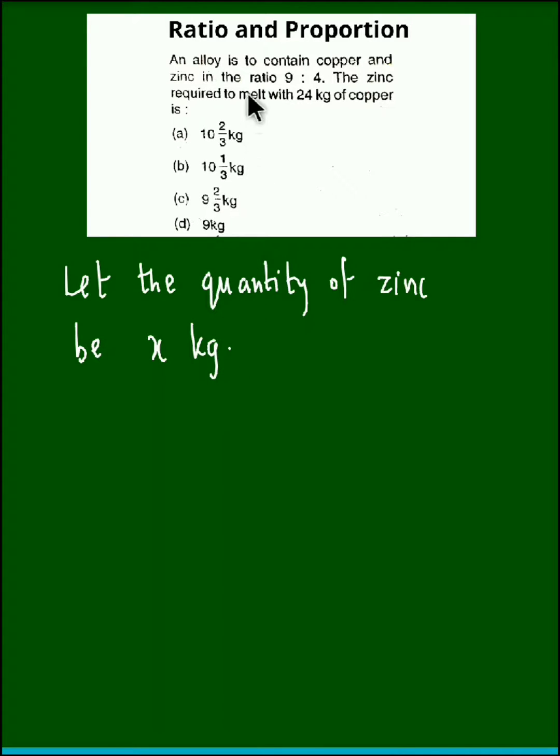Now, we have been given the ratio of copper and zinc as 9 is to 4, and the weight of copper is 24 kg.